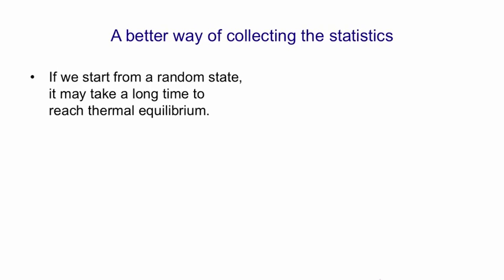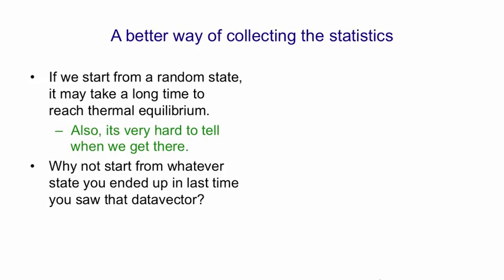There are better ways of collecting the statistics than the method that Terry Sejnowski and I originally came up with. If we start from a random state, it may take a long time to reach thermal equilibrium. Also, there's no easy test for whether you've reached thermal equilibrium, so we don't know how long we need to run for. So the idea is: why not start from whatever state you ended up in last time you saw that particular data vector? We remember the interpretation of the data vector in the hidden units and start from there. This stored state — the interpretation of the data vector — is called a particle.